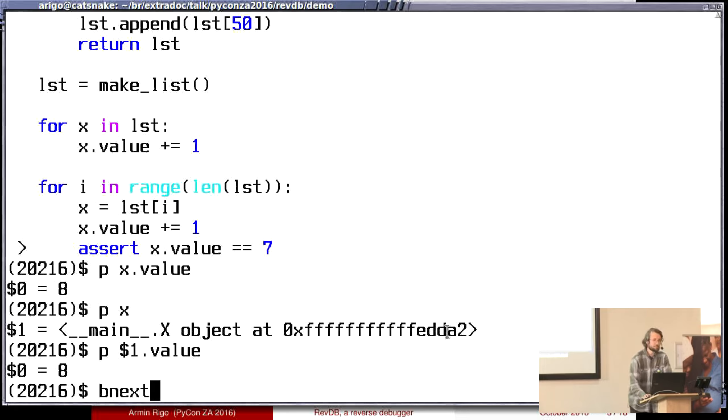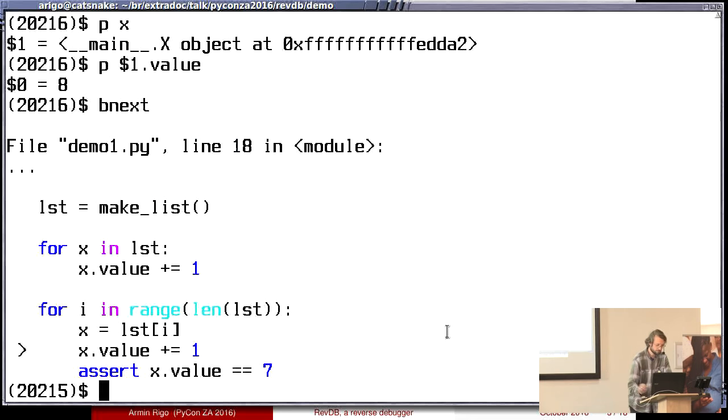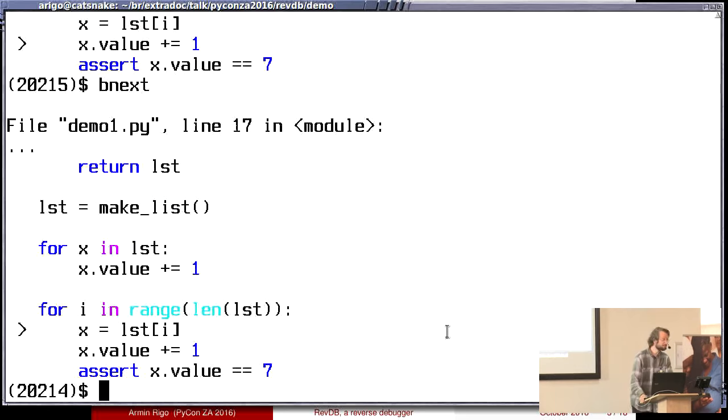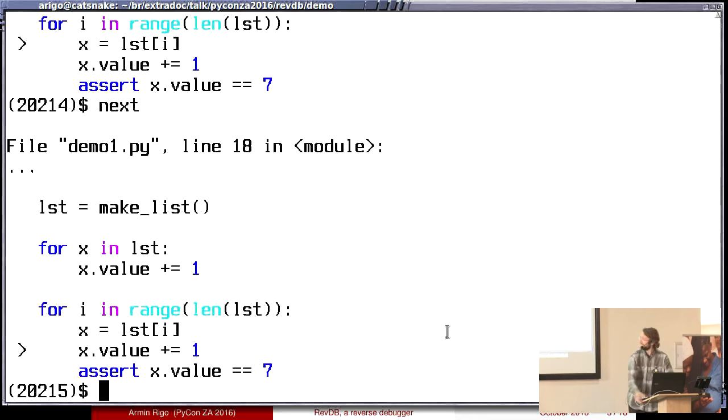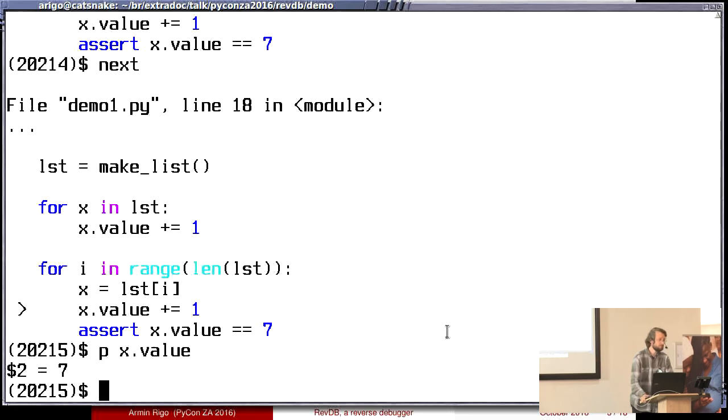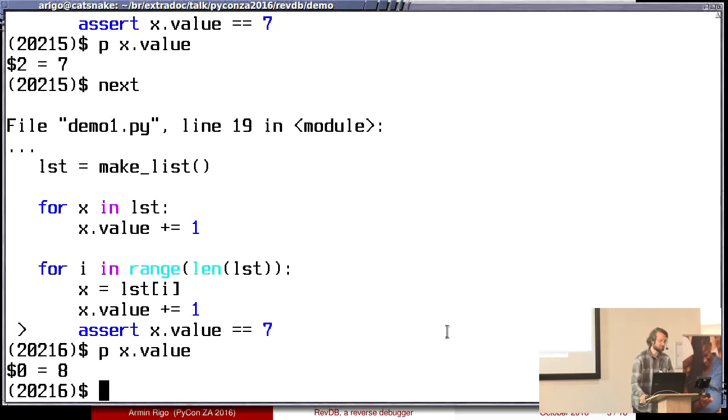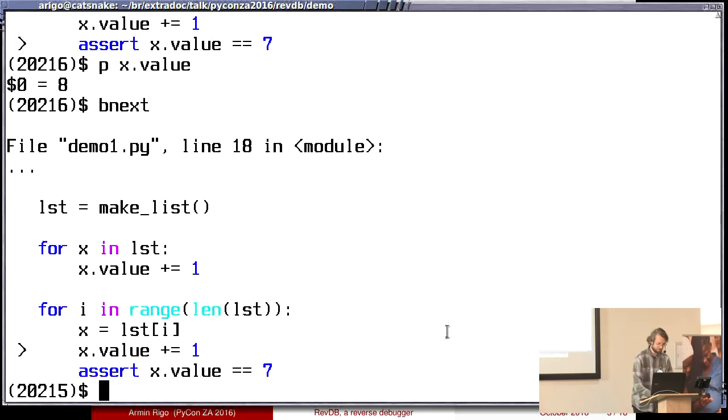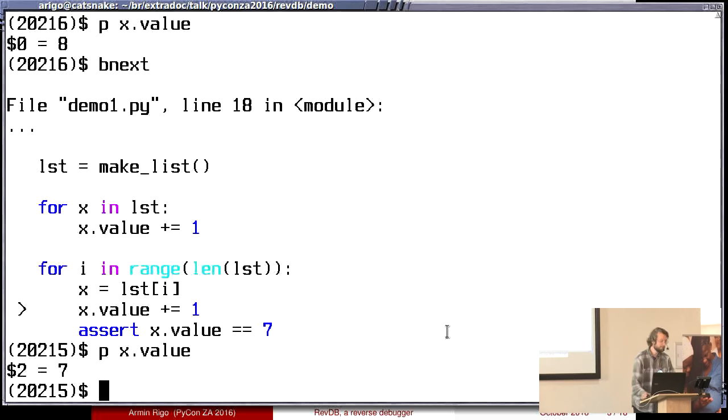I can use a command that says backward next. Poof! Now I'm here. Right? I can repeat. Now I'm here. And I can go forward again. I'm here. So now if I'm here and I print x.value, it is 7, no longer 8. Right? Because 8 is, if I go next, here it's 8. If I go there, it is 7. Cool.